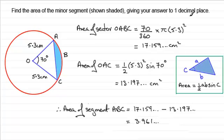We need to give the answer to one decimal place, so that's 4.0 cm² (1dp).